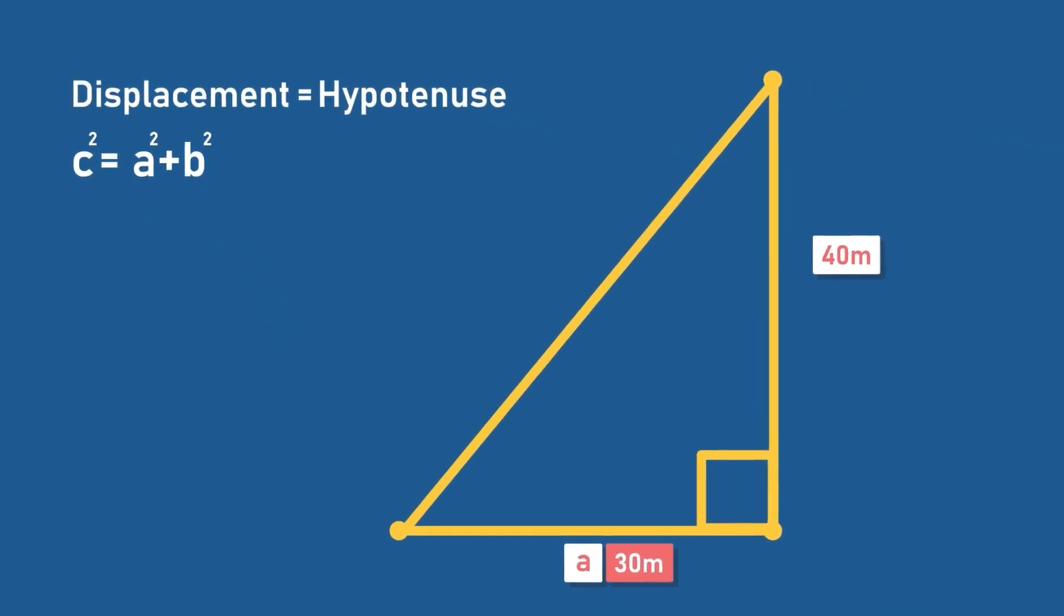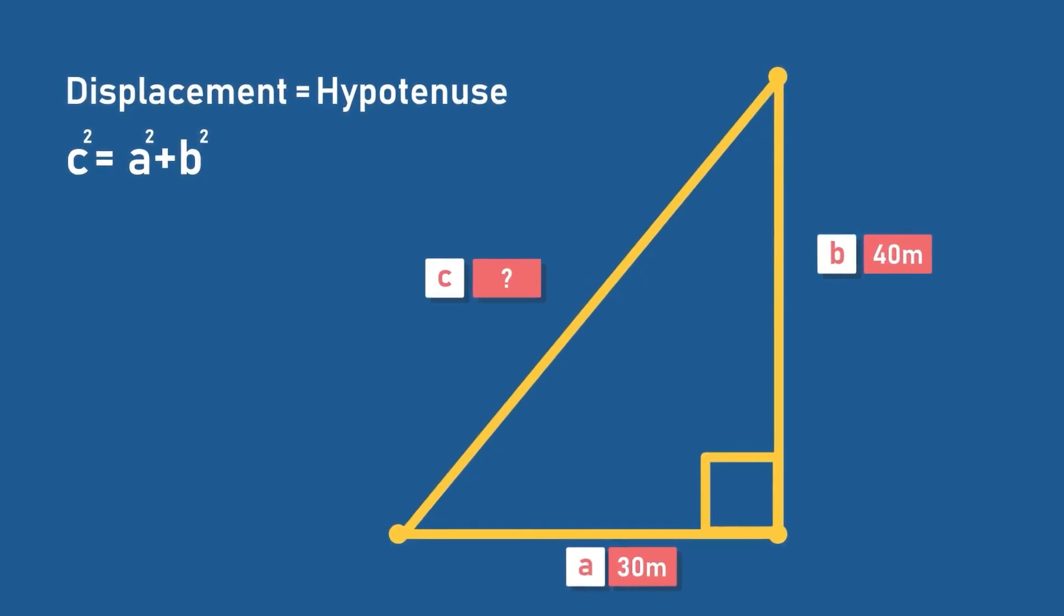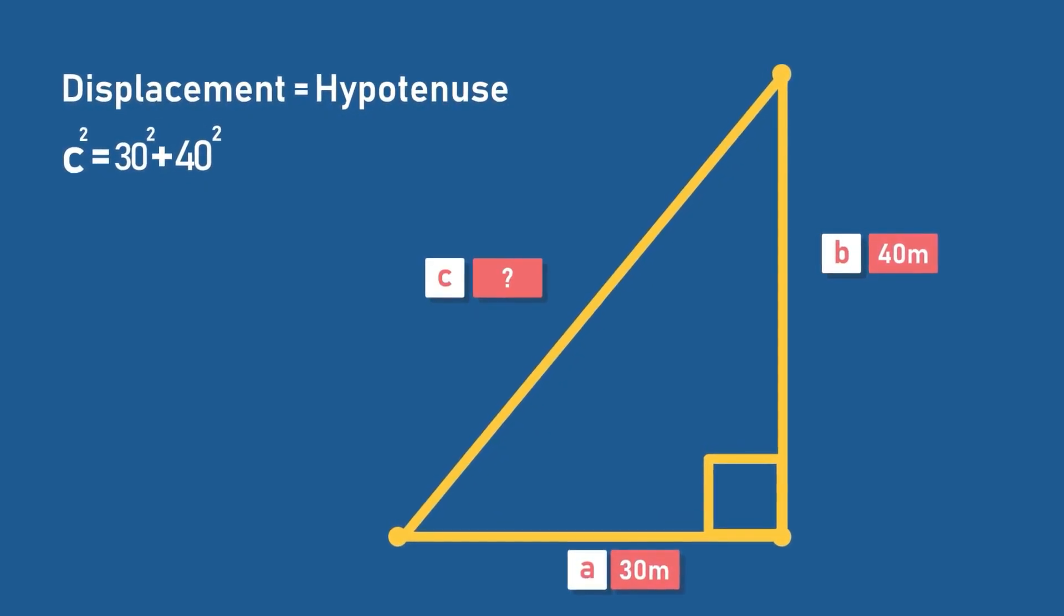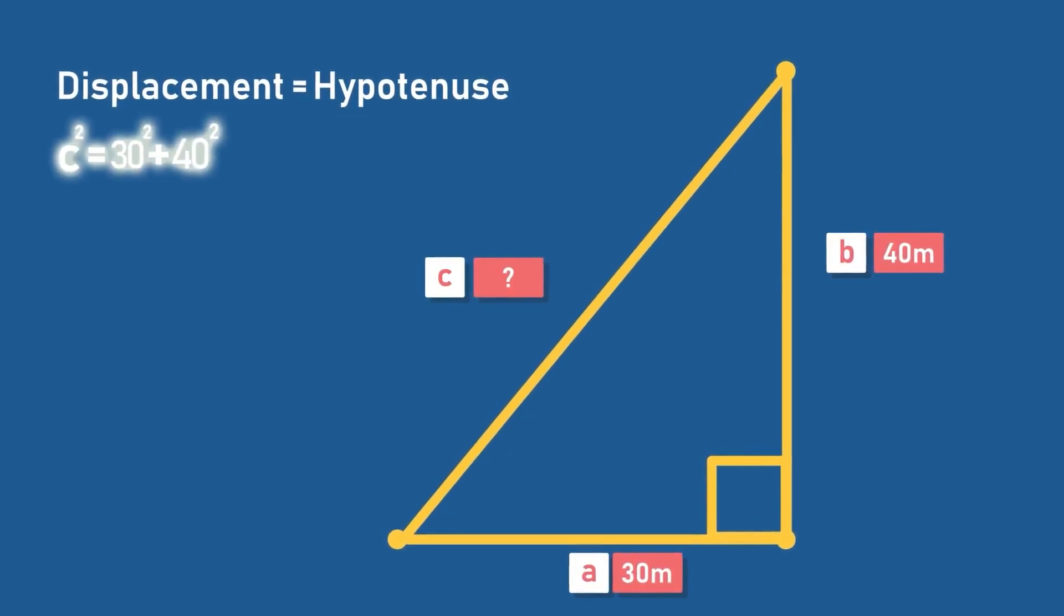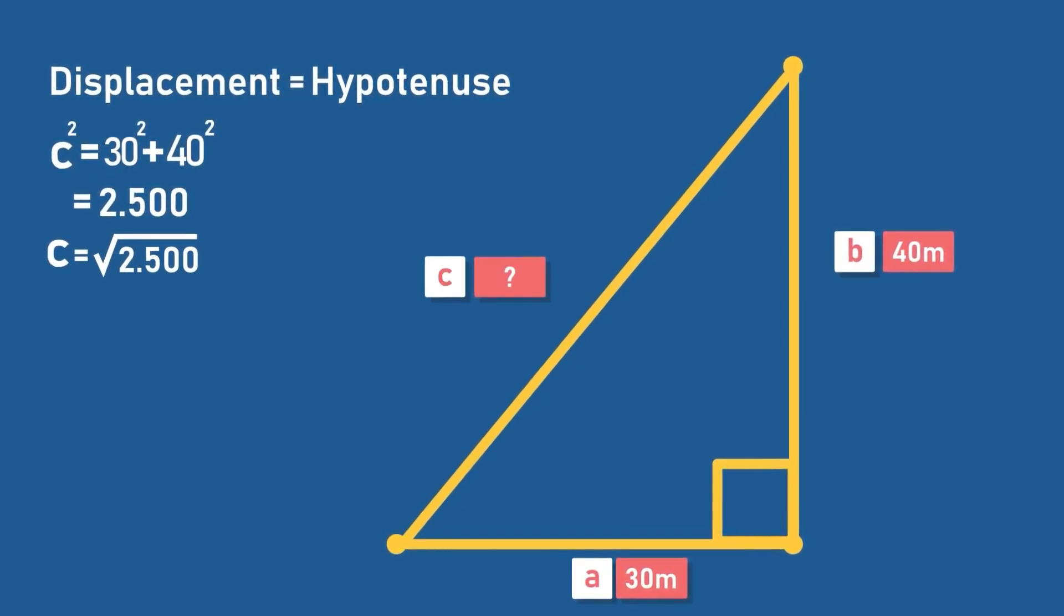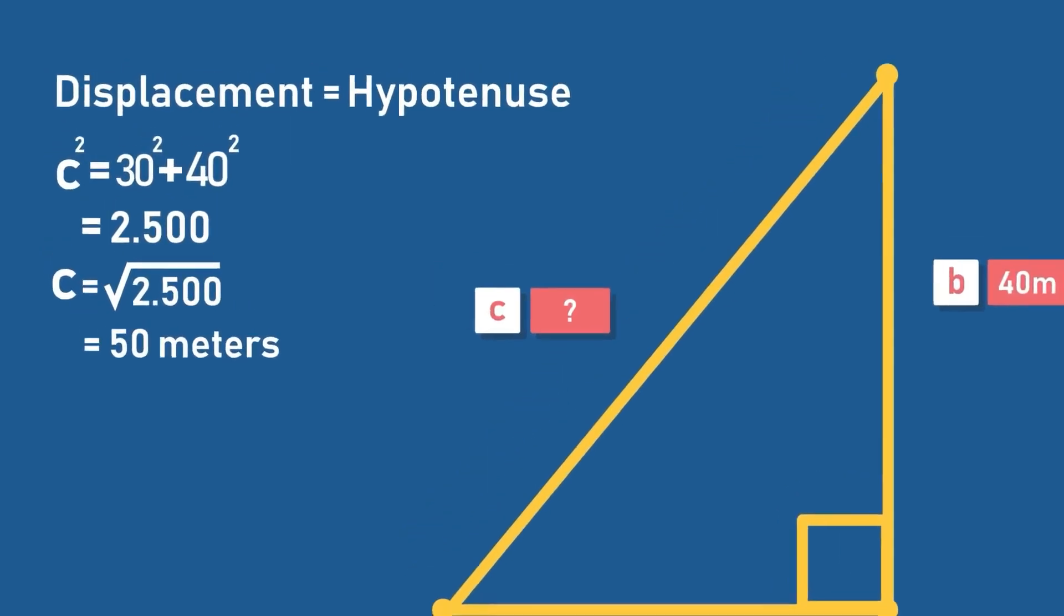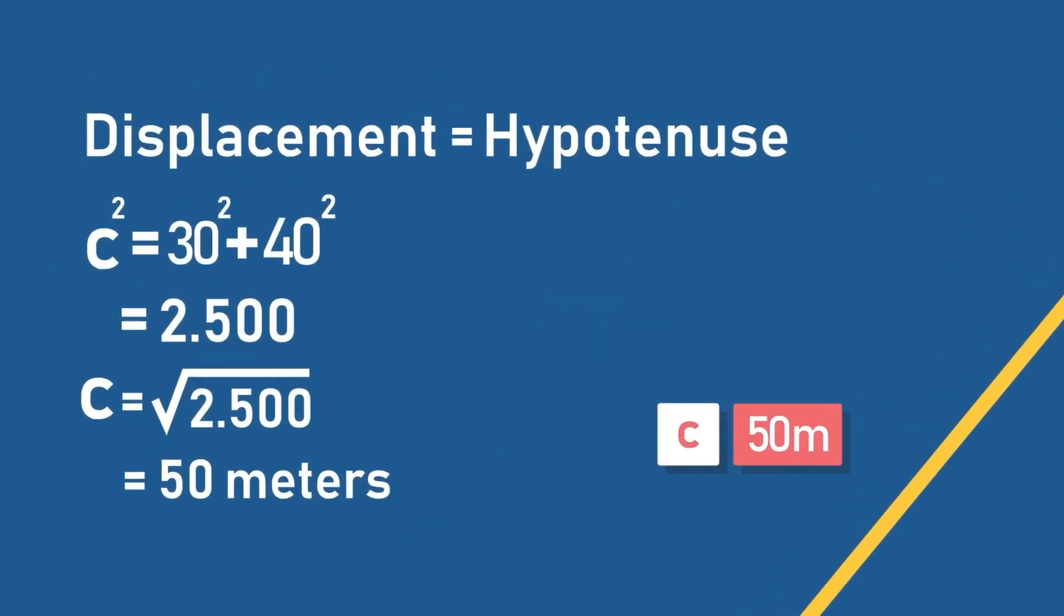Where a is the base of the triangle, b is the perpendicular, and c is the hypotenuse. Inserting the values, we get c squared equals 2500 meters, c equals square root of 2500, which is equal to 50 meters, much shorter than the actual distance of 70 meters.